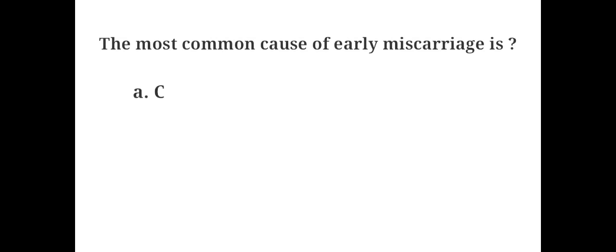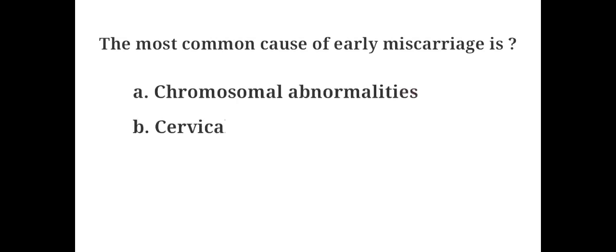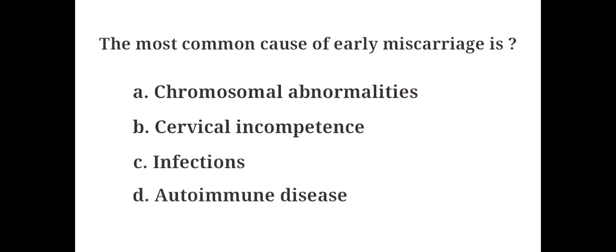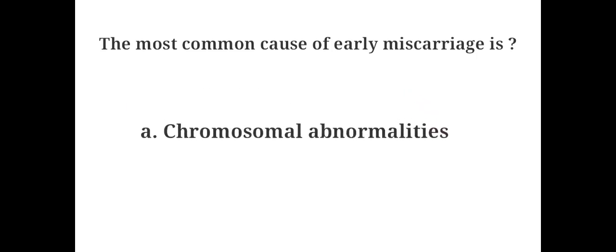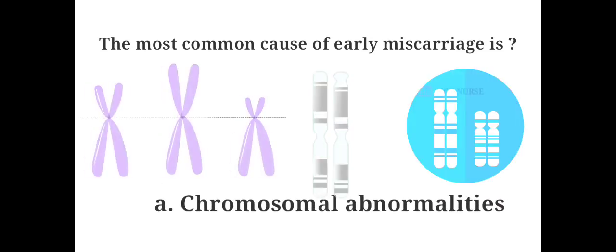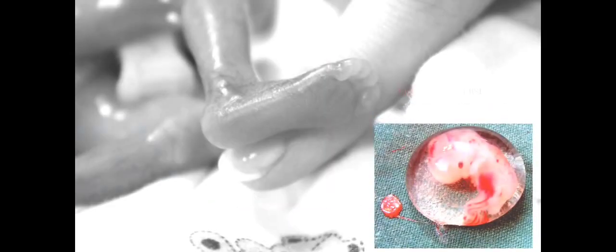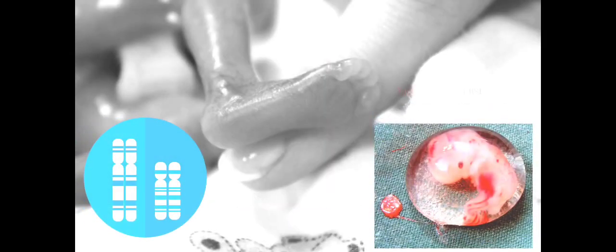The most common cause of early miscarriage is: A. Chromosomal abnormalities, B. Cervical incompetence, C. Infections, D. Autoimmune disease. The answer is A. Chromosomal abnormalities. Miscarriage, also called spontaneous abortion, is mainly attributed to chromosomal abnormalities in the embryos. Approximately 70-80% of miscarriages occur due to chromosomal defects in the embryo.